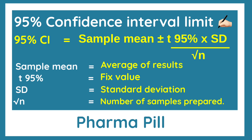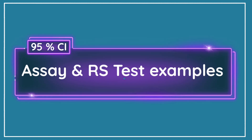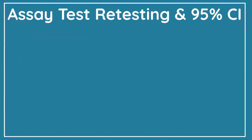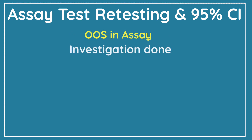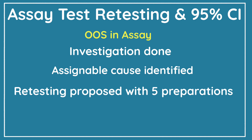This is all about the formula of the 95% confidence interval limit. Let us understand this formula with the help of a few practical examples. We will cover two examples: an assay test and a related substances test. Starting with the assay test: suppose an OOS result was obtained in the assay test, and after investigation an assignable cause was identified, and retesting is proposed with five preparations.